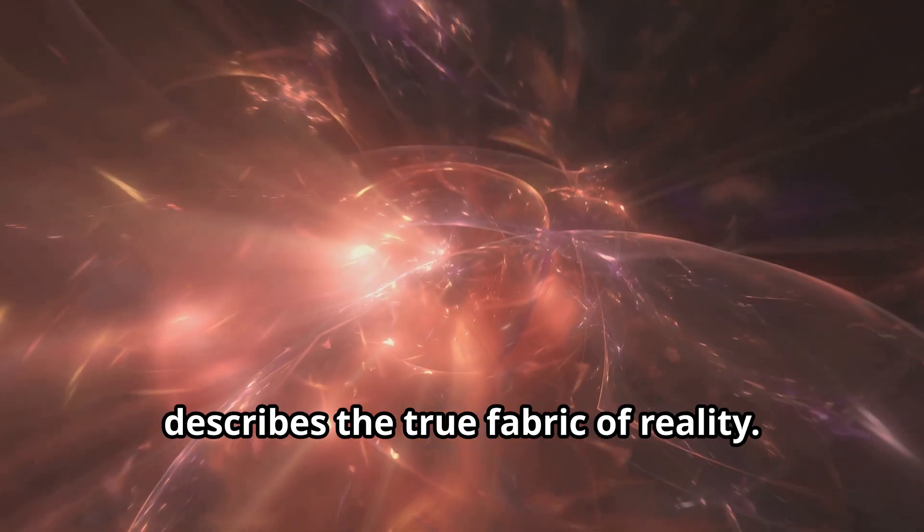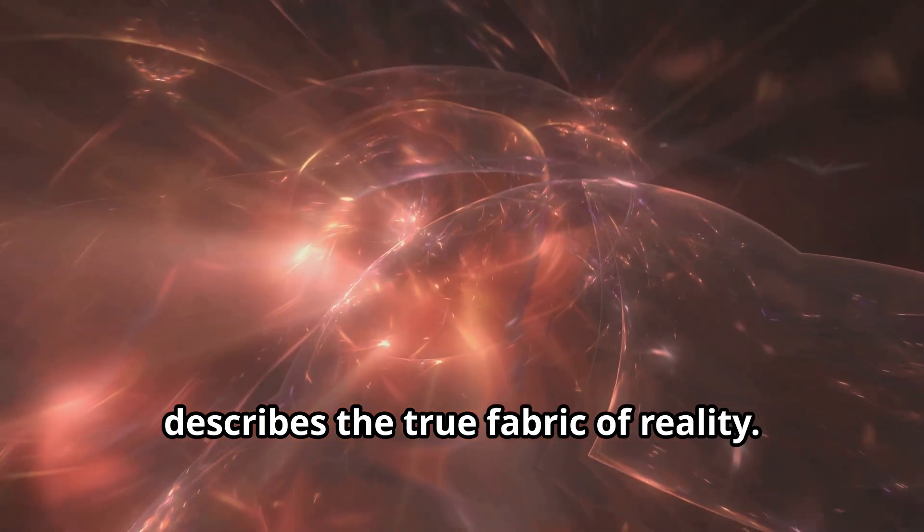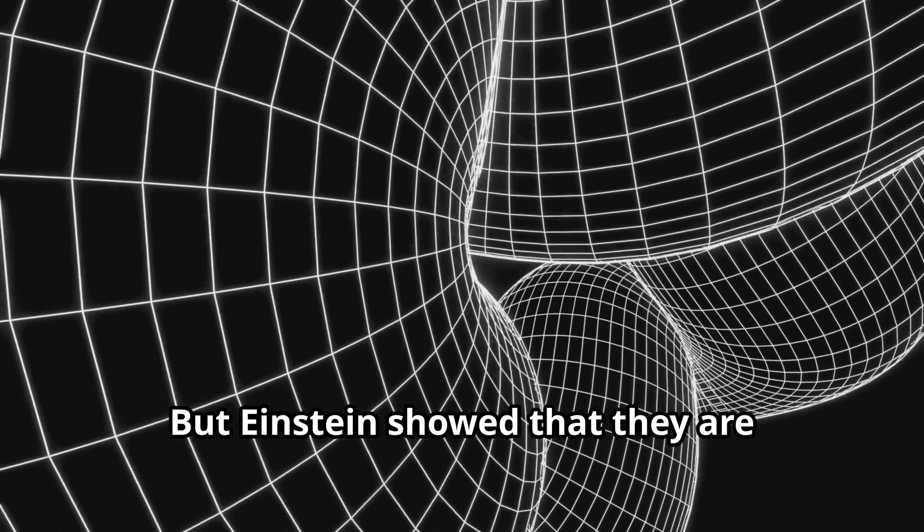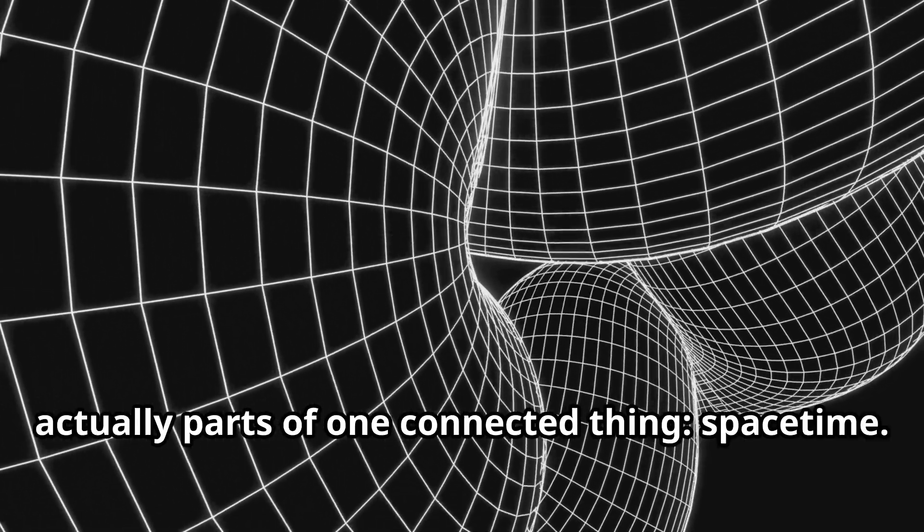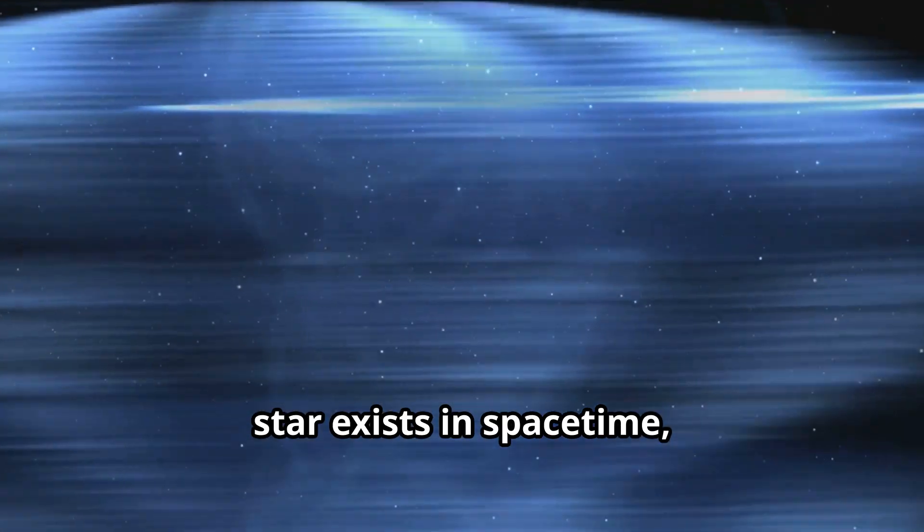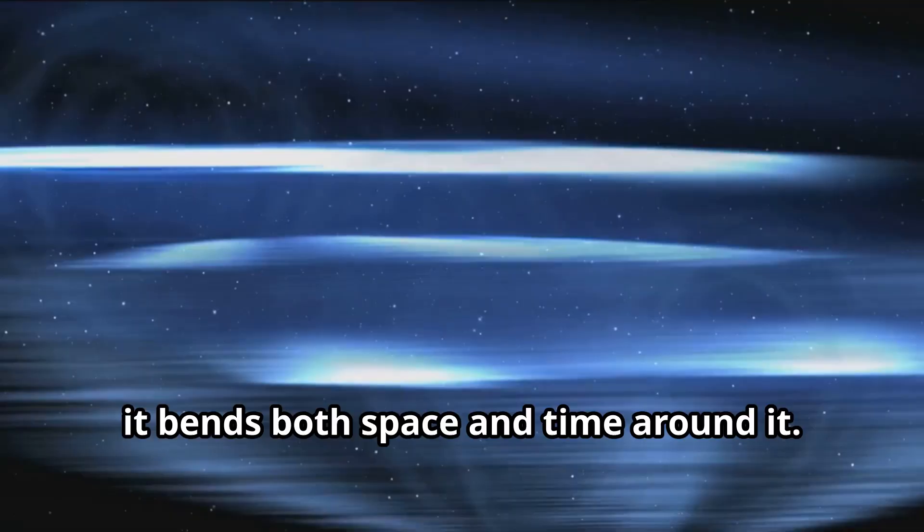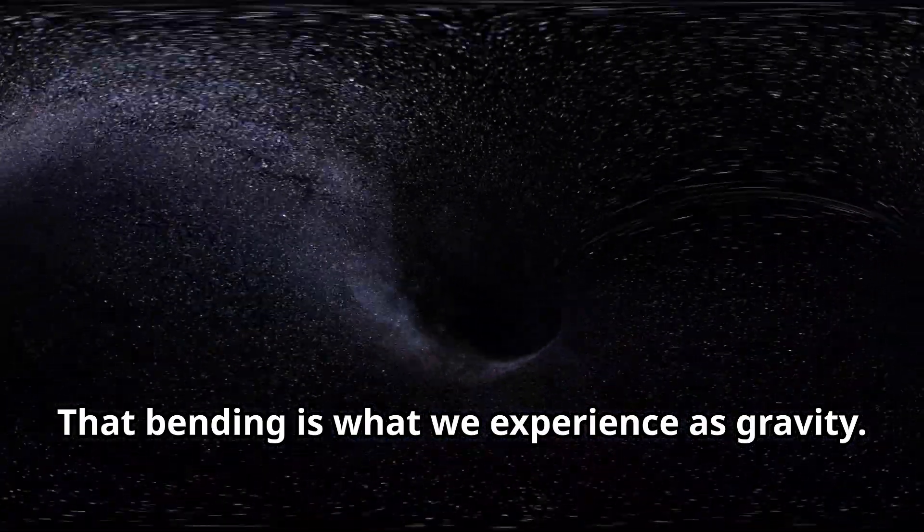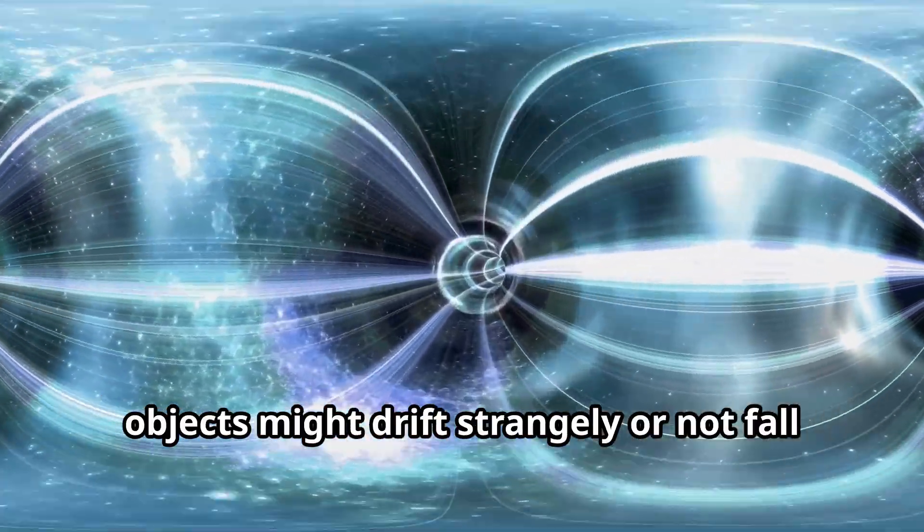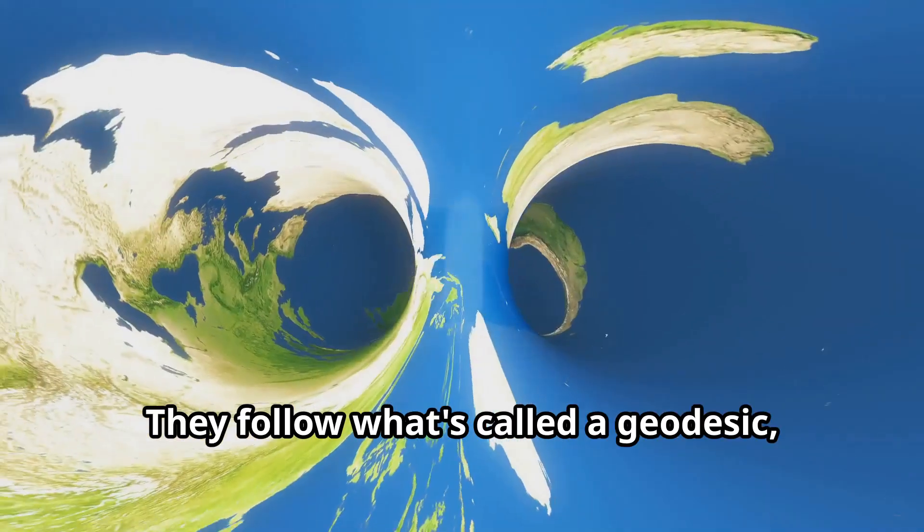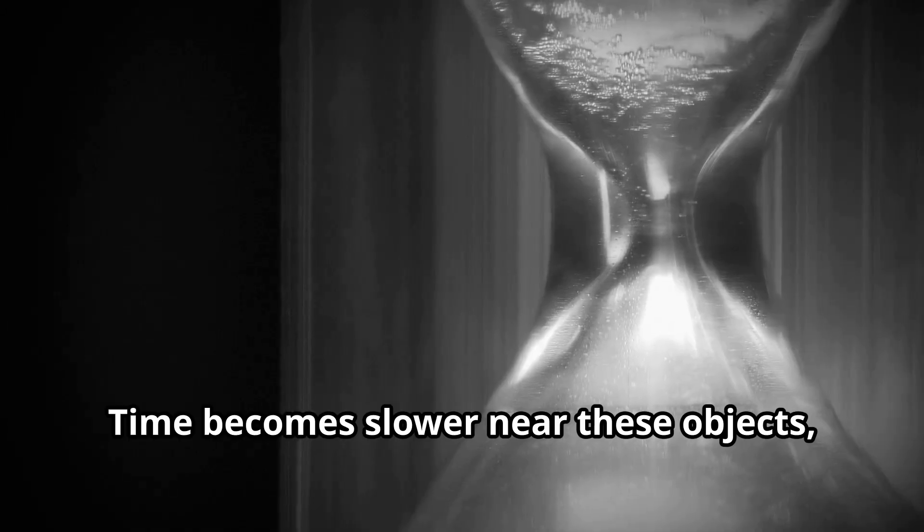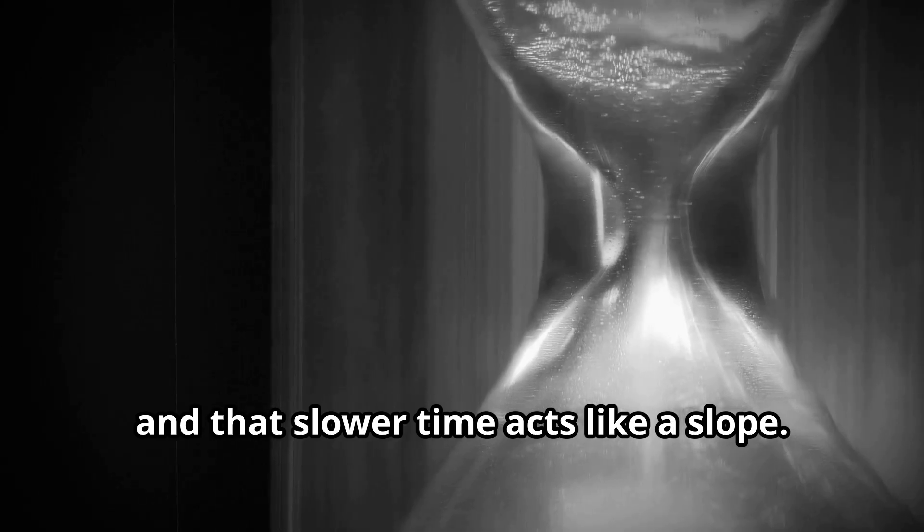Space-time is not just a clever word. It describes the true fabric of reality. In our daily lives, we think of space and time as totally separate. But Einstein showed that they are actually parts of one connected thing, space-time. When a massive object like a planet or star exists in space-time, it bends both space and time around it. That bending is what we experience as gravity. If only space were bent and time stayed the same, objects might drift strangely or not fall at all. They follow what's called a geodesic, which is the natural path through curved space-time.